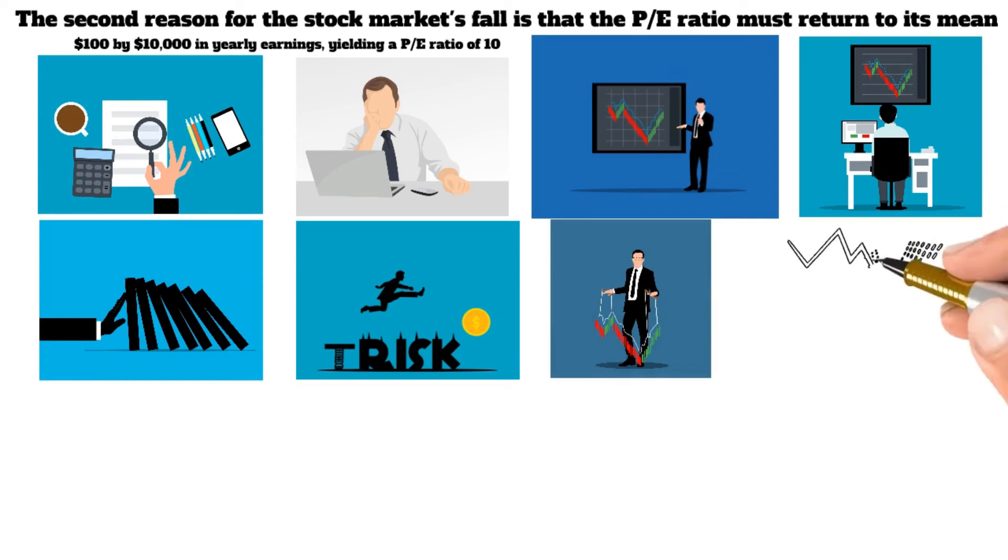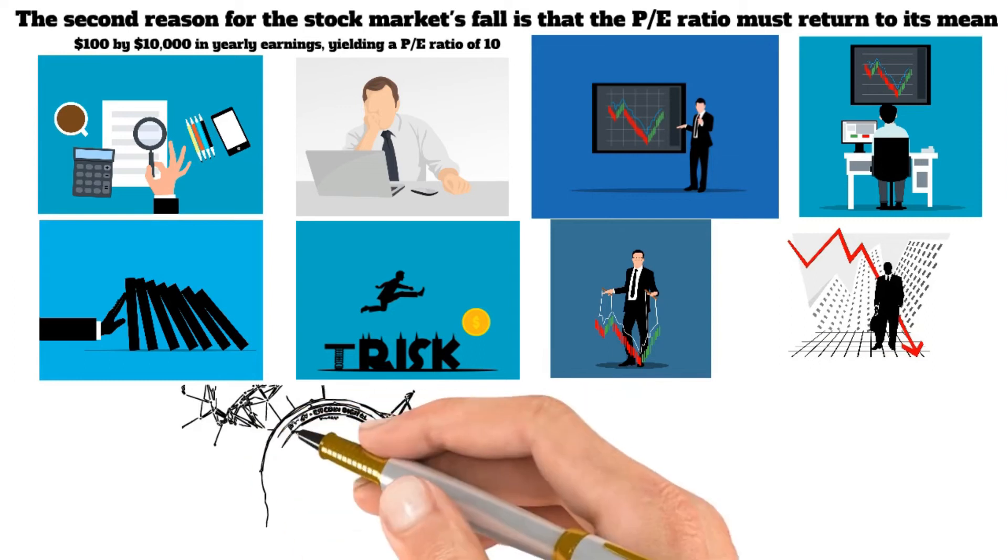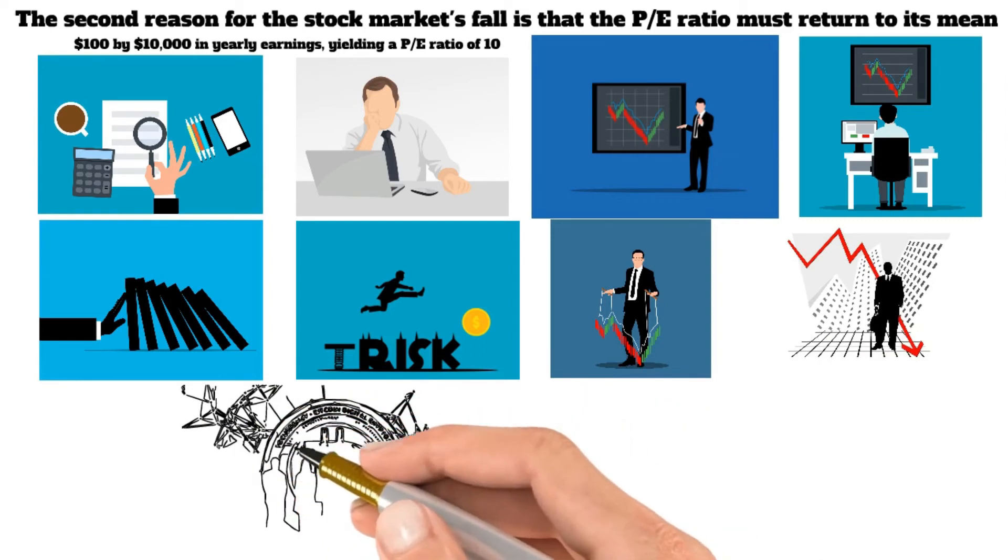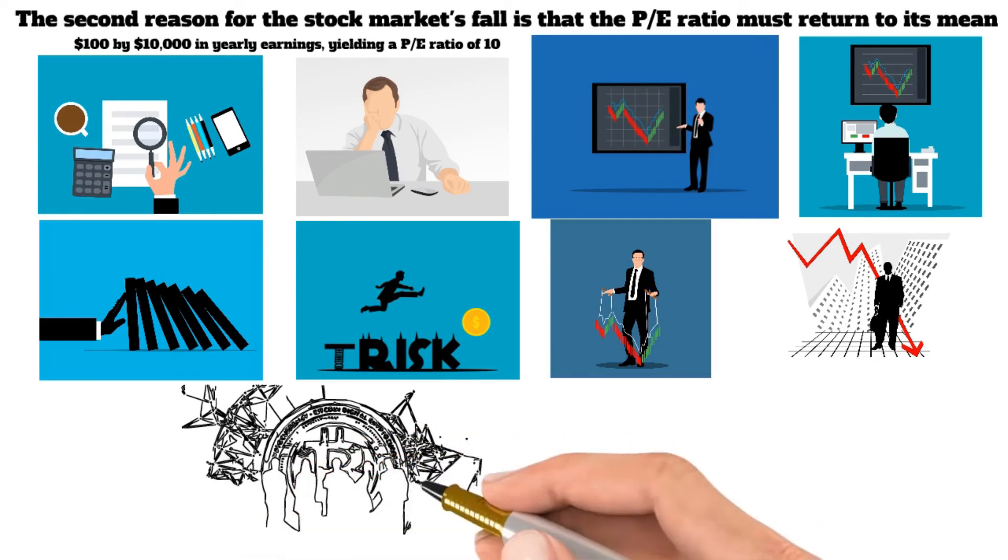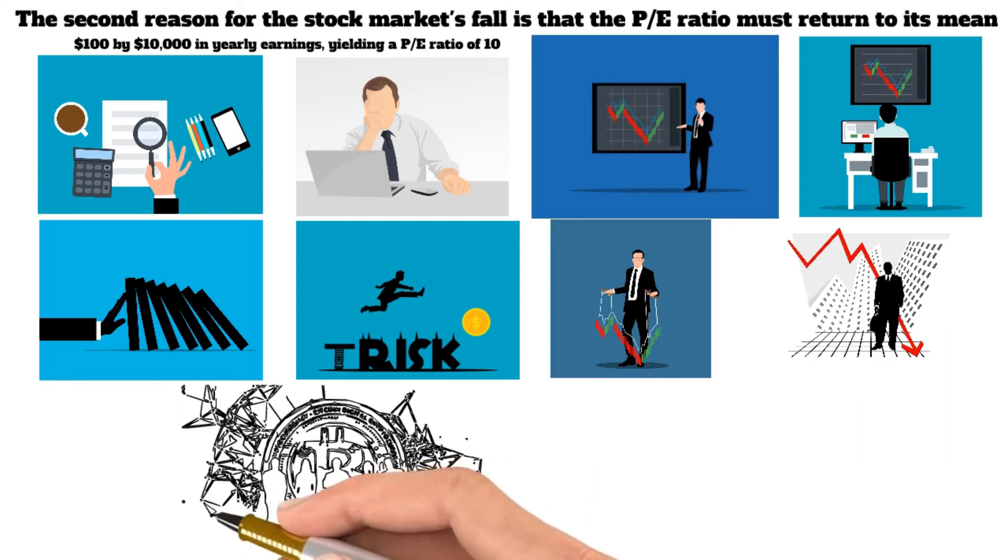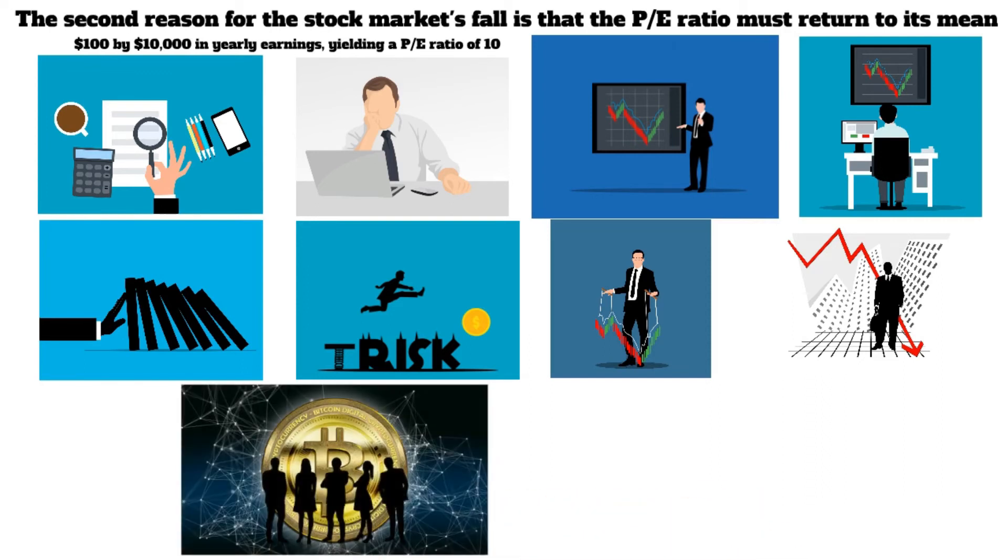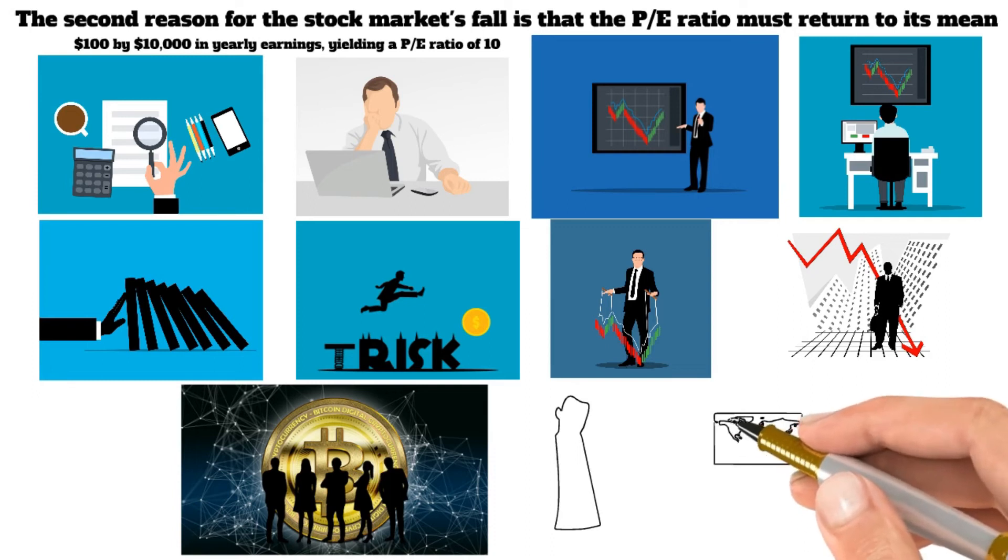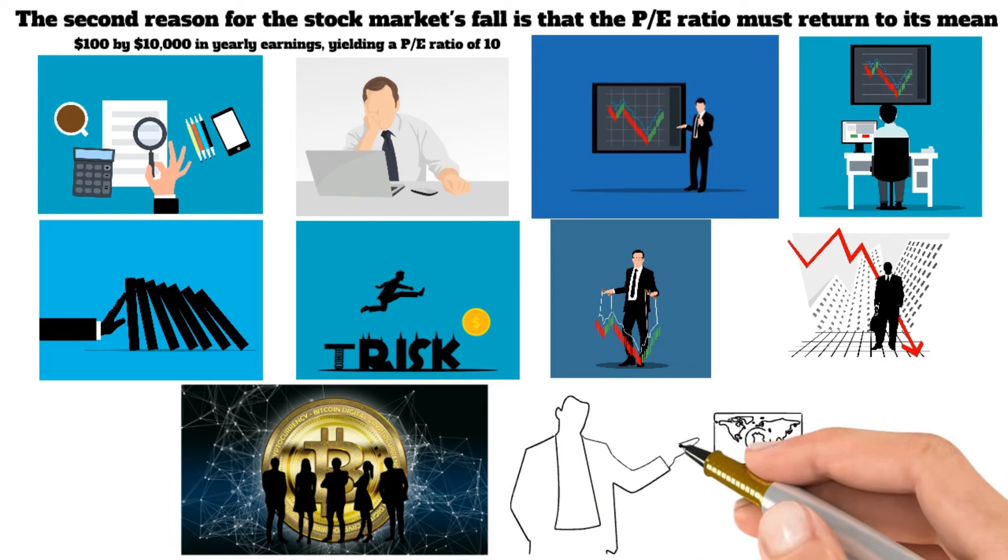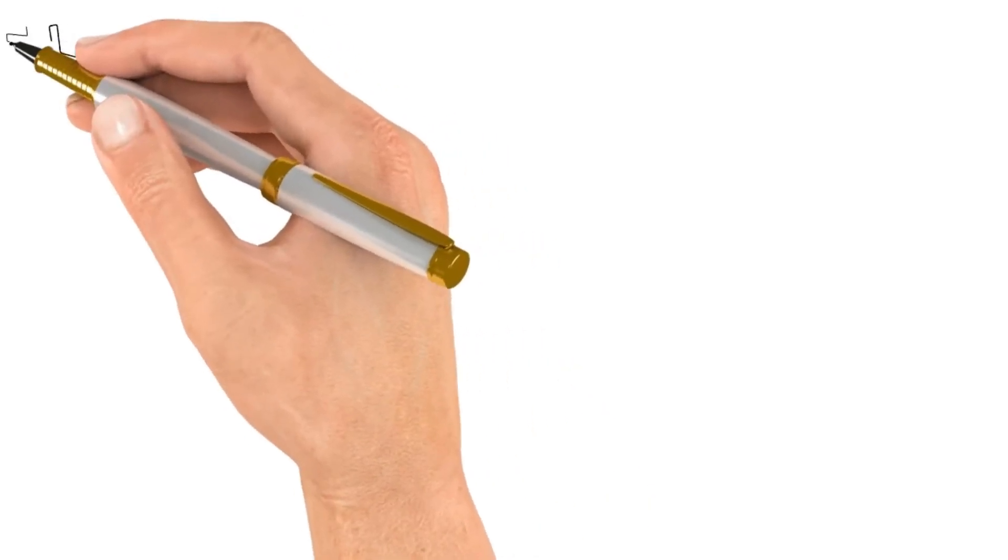The third reason why stocks are crashing is the macro environment. What does it mean when the tide rises and all boats are lifted? All you cryptocurrency speculators are aware of it and have direct experience. If the value of Bitcoin grows, so will the value of 99% of other cryptocurrencies. Likewise, even if you aren't investing in Bitcoin, you should be mindful of its performance while buying or selling cryptocurrencies since it will have an influence on your altcoins. The stock market will go through the same process.